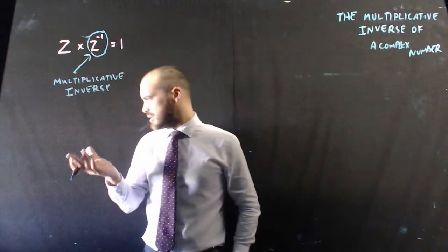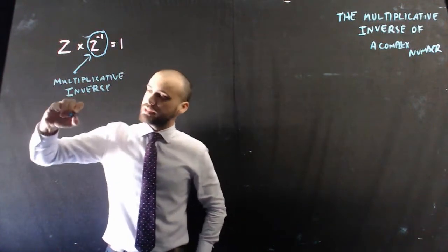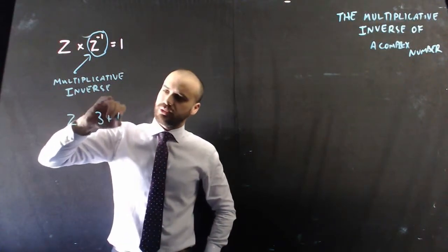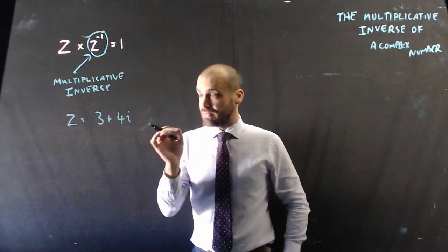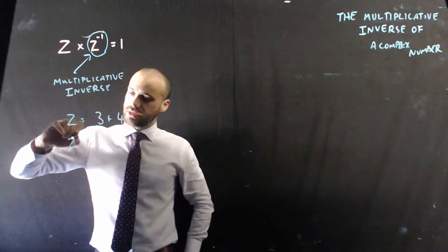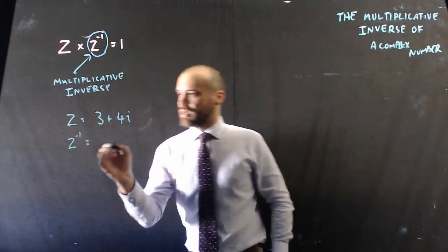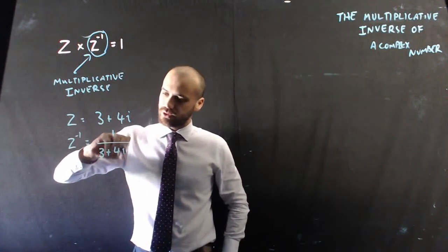Let's say I have a complex number. Let's say that z equals, I've just got something written over here, z equals 3 plus 4i. The multiplicative inverse, z to the negative 1, is just this raised to the power of negative 1, which puts it on the bottom of a fraction, 3 plus 4i.